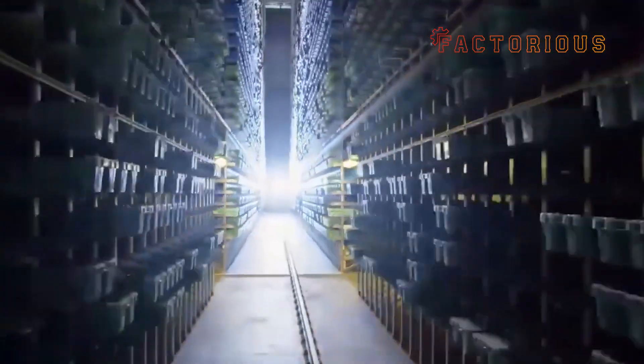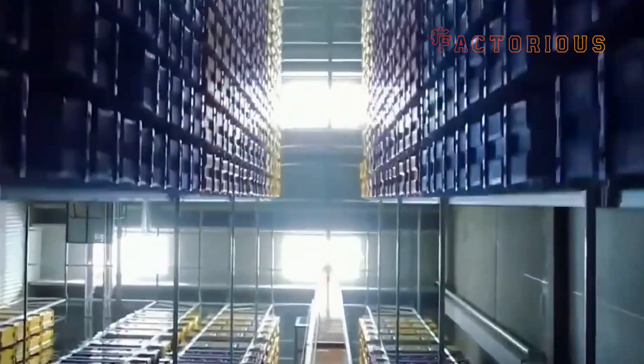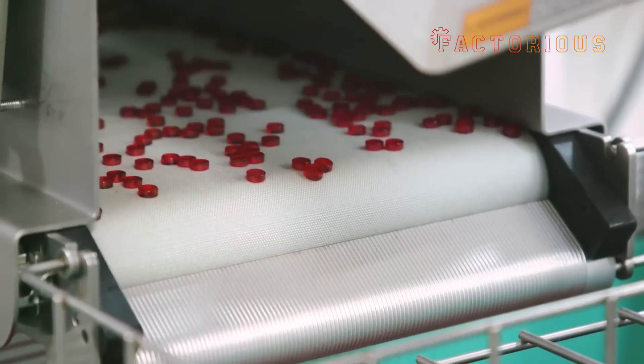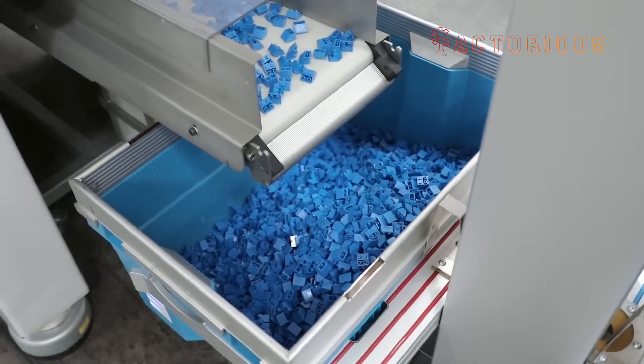Which is why a modern Lego piece still clicks seamlessly with one made over half a century ago. At Lego's massive raw material storage facility in Beland, Denmark, ABS arrives in tiny, round plastic granules called pellets.